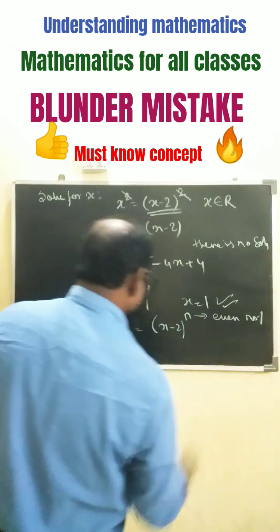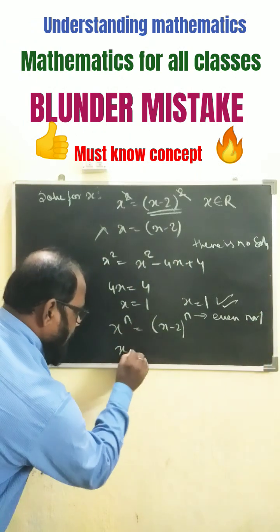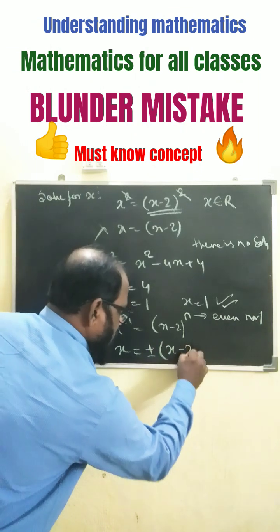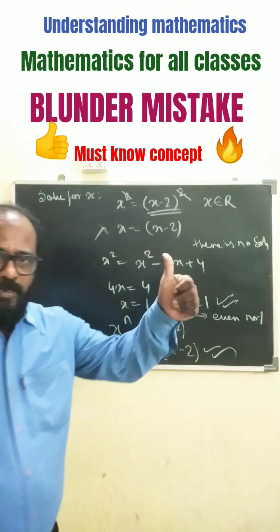so simplify. How we can write? Simply we can write here x equals to plus or minus x minus 2. So this is the real solution. Thank you.